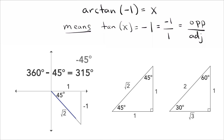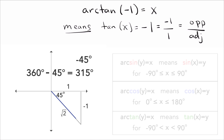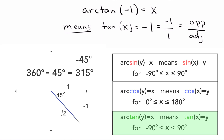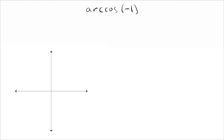Now we need to decide: is the answer negative 45 degrees, or 315 degrees? For arctangent, x must be between negative 90 and positive 90 degrees. Negative 45 degrees satisfies that condition, but 315 degrees does not — it's larger than 90. So the correct answer is negative 45 degrees.